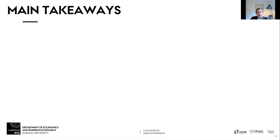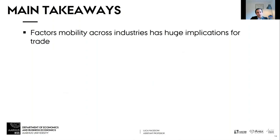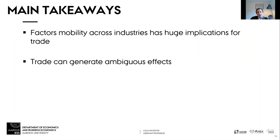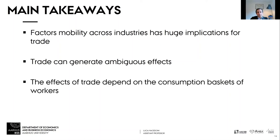The main takeaways of the specific factors model: factor mobility is critically important. By assuming capital cannot move between sectors, we find very different predictions from the Stolper-Samuelson and Rybczynski theorems. The Stolper-Samuelson theorem generates an ambiguous effect on workers in the specific factors model, so trade has ambiguous effects on workers depending on their consumption basket. The Rybczynski theorem shows that changes in factor endowments have quantitative effects on wages and rentals, whereas in the Heckscher-Ohlin model those factor prices did not change. That's it for today — thank you for watching, see you next time!